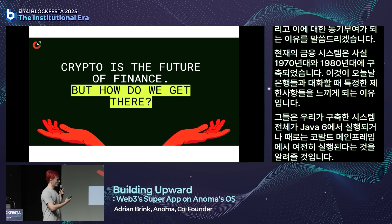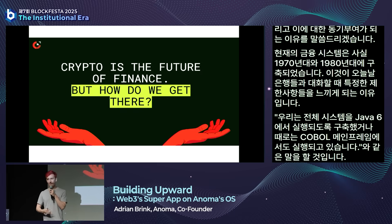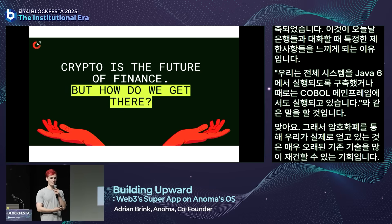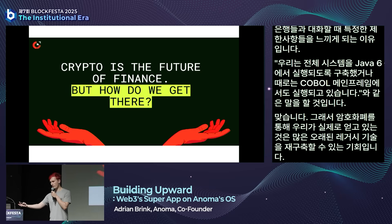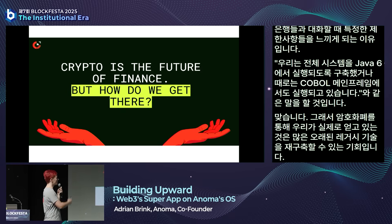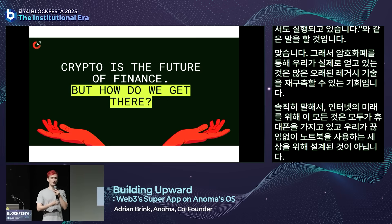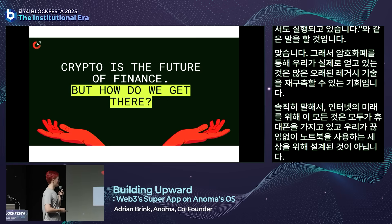With crypto, what we're actually getting is the chance to rebuild a lot of very old legacy tech for the future of the internet. None of this stuff was really designed for the world where everyone has a mobile phone or a laptop. So here we really get the chance to rebuild very cool applications that are incredibly future-proof and much nicer to use than what we currently have. But the big question is, how do we actually practically get there?